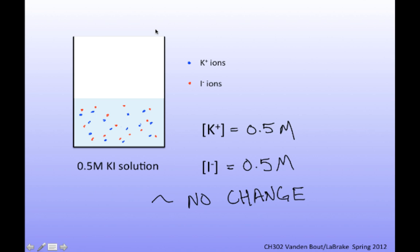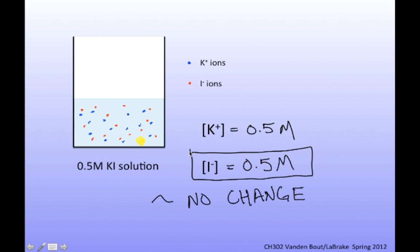Now instead of putting in my keys, let's put in some of that yellow solid — a little bit of lead iodide. There's a little chunk of lead iodide down at the bottom. Lead iodide is fairly insoluble, and as a result, essentially there will be no change. The iodide concentration will still be 0.5 molar. Now I can ask: what is the lead concentration in this new solution when I put it in with the common ion, I⁻?